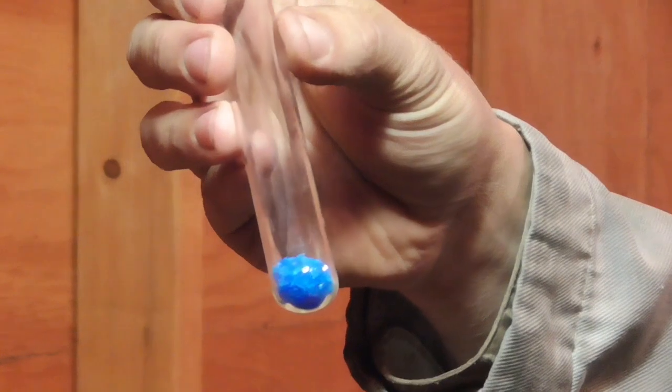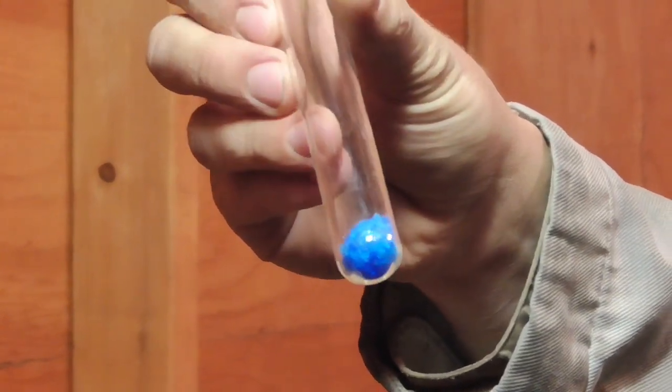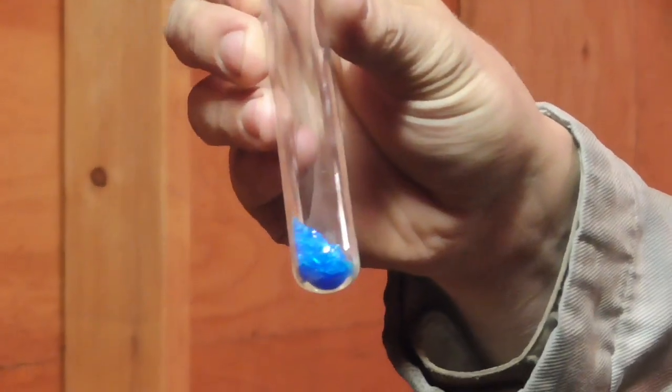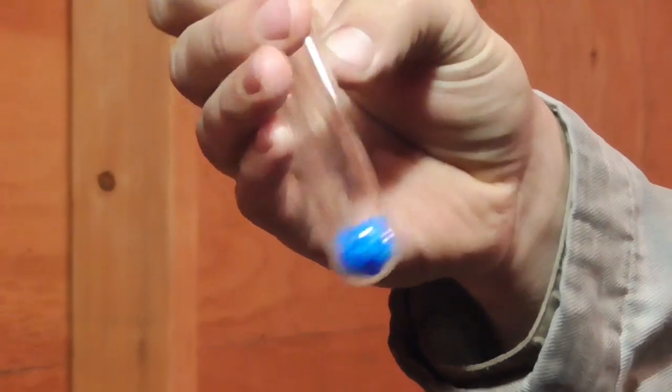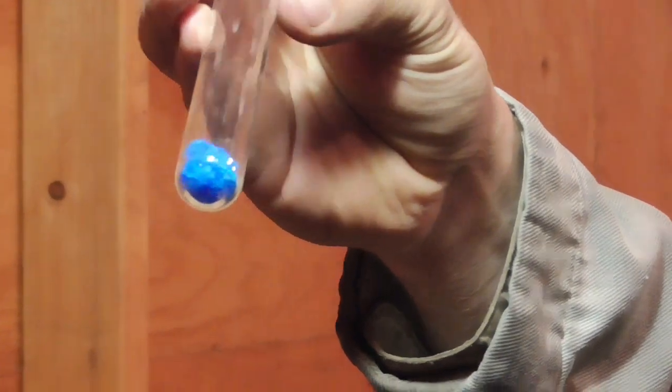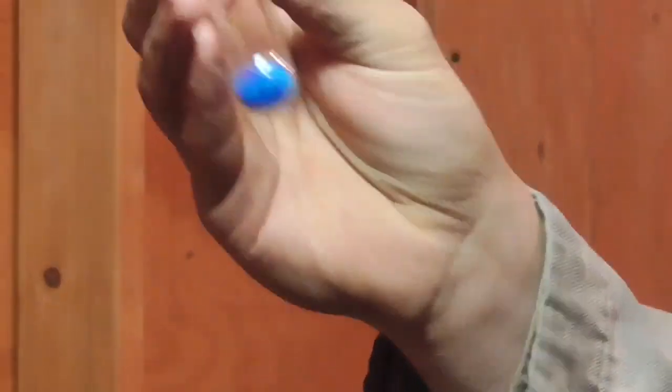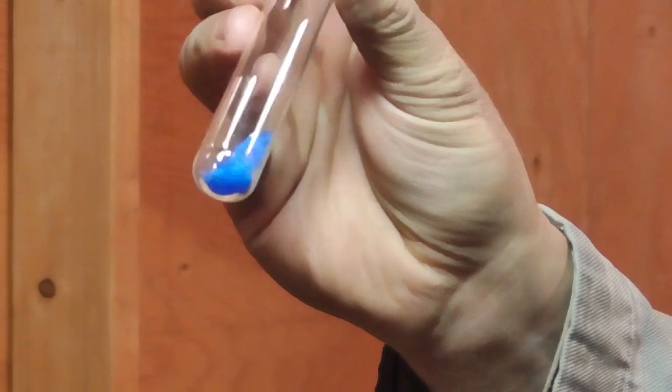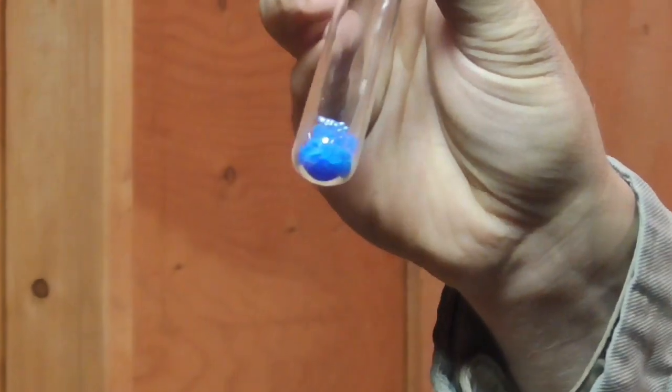This copper sulfate appears in the form of dark blue crystals and appears perfectly dry. But as I said, this is copper-2-sulfate pentahydrate, so there's actually a fair amount of water bound up in the crystal structure. Let's heat this up and see if we can drive off some of that moisture.